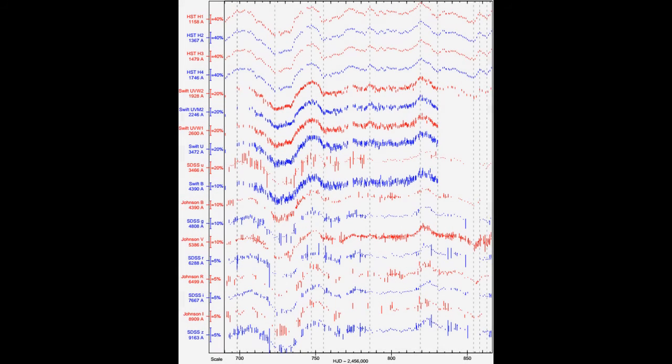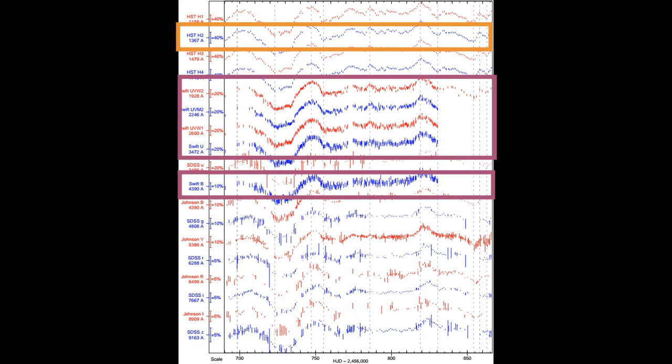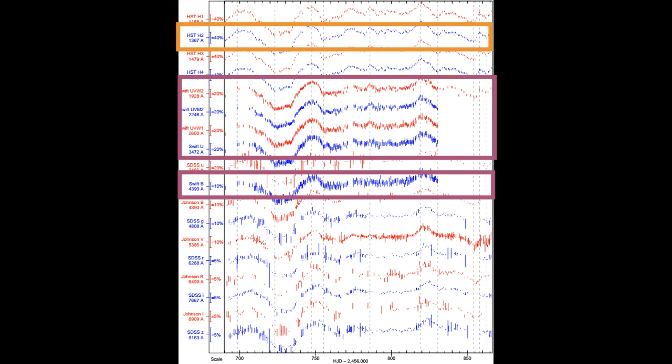This figure shows the continuum light curves used in this study, arbitrarily rescaled and shifted for clarity. The HST 1367 angstrom light curve was presented in Paper 1, while the Swift X-ray, near-UV, and optical light curves were presented in Paper 2. The current paper presents the ground-based optical light curves in Johnson & Cousins BVRI and SDSS ugriz filters.